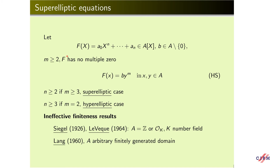Superelliptic equations. Consider now a polynomial with coefficients in A. Assume that F has no multiple zero and consider this equation, which is called superelliptic if M is at least 3 and hyperelliptic if M equals 2. The first ineffective finiteness result was also obtained by Siegel in 1926 over number fields. Later, Löweck gave a finiteness criterion over number fields. Lange derived this finiteness result over arbitrary finitely generated domains from the general version of the Siegel-Lange theorem.